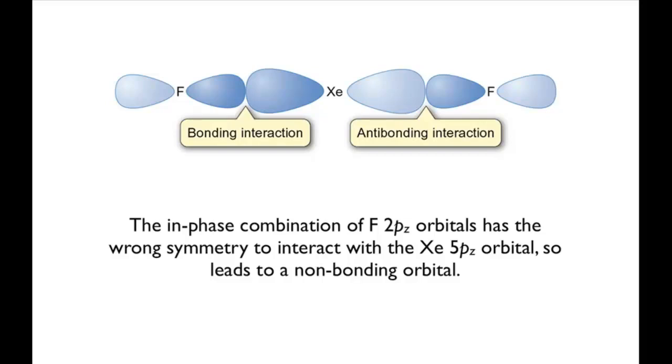In contrast, the out-of-phase combination has the correct symmetry to interact with the xenon pz orbital. Depending on its phase, the combinations give rise to a bonding orbital and an antibonding orbital.